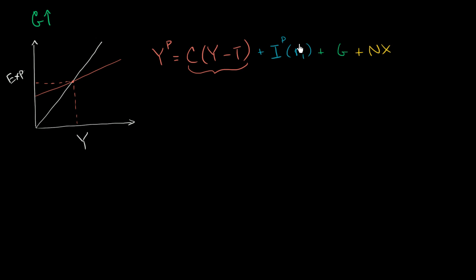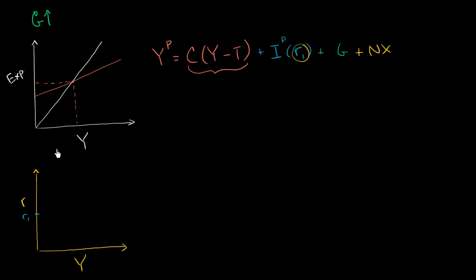We can use this information — given that we were sitting at interest rate R1 — to plot at least one point on our IS curve. Here we have real interest rates on one axis and aggregate GDP on the other. When real interest rates are sitting at R1, the aggregate level of output or income is at a certain point. We drop that down, and that is a point on our IS curve. We can draw the entire IS curve, which might look something like that.